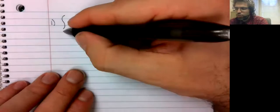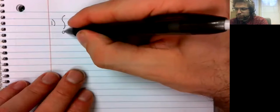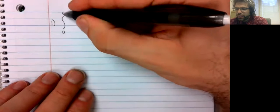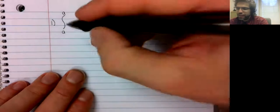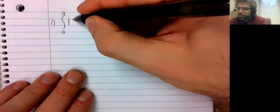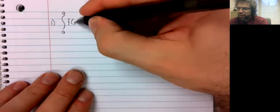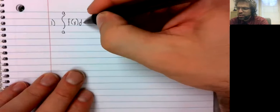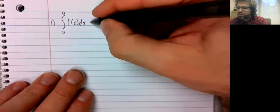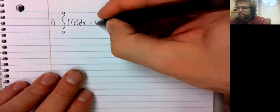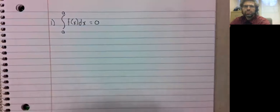Property one: the definite integral from a to a of f(x)dx equals zero.